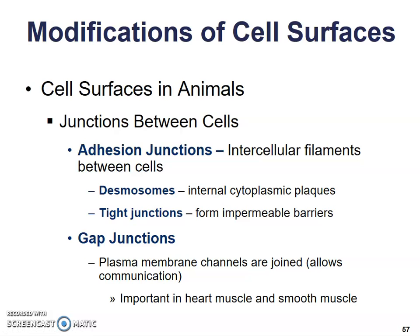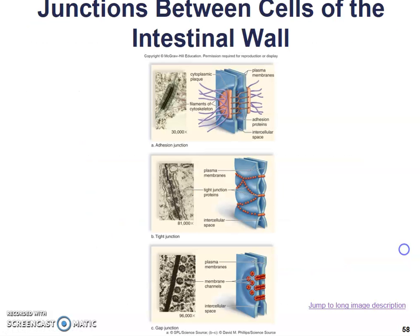Gap junctions are very important in heart muscle and smooth muscle so that cells can communicate very, very quickly. You want that because you want your heart to beat the way that it should — when it doesn't, that's bad.